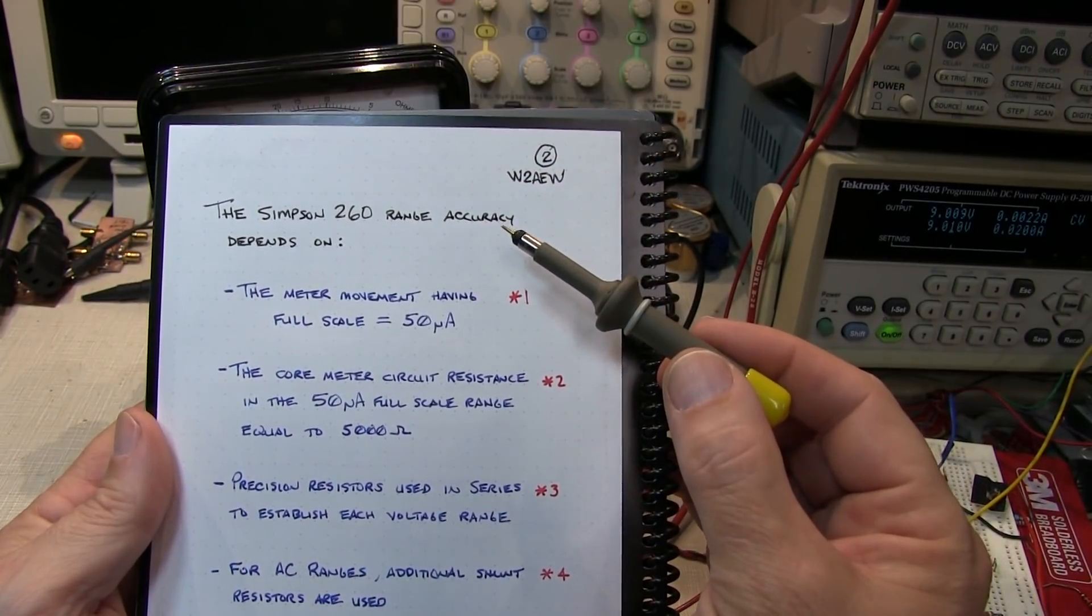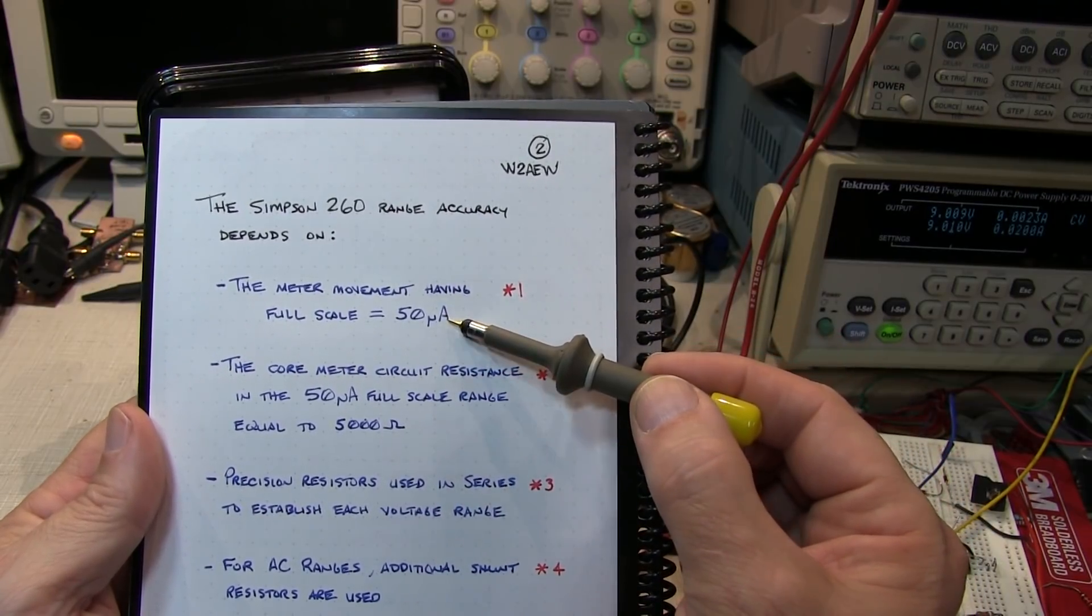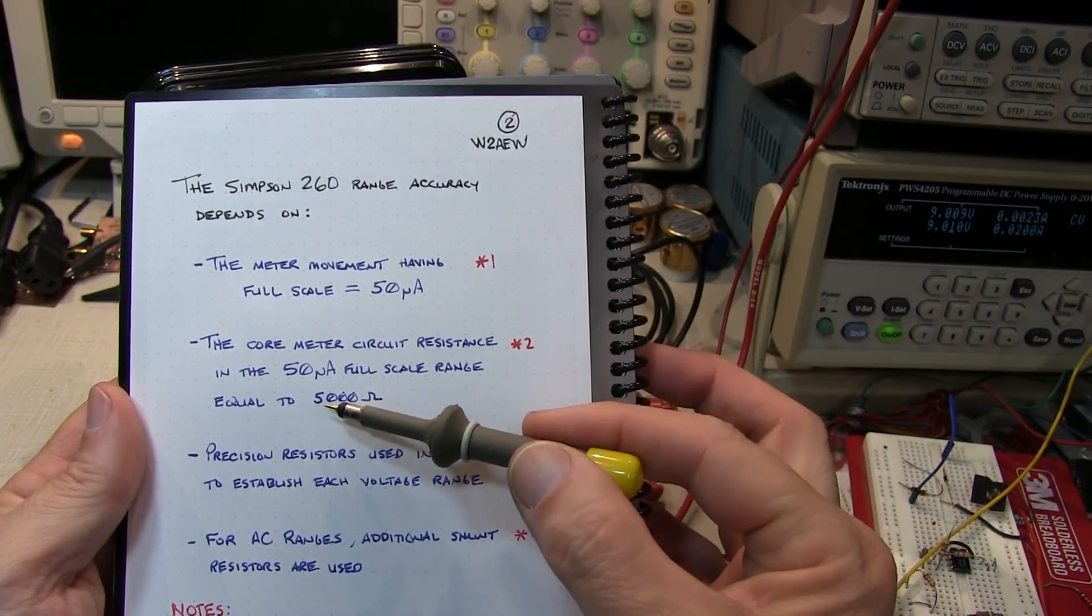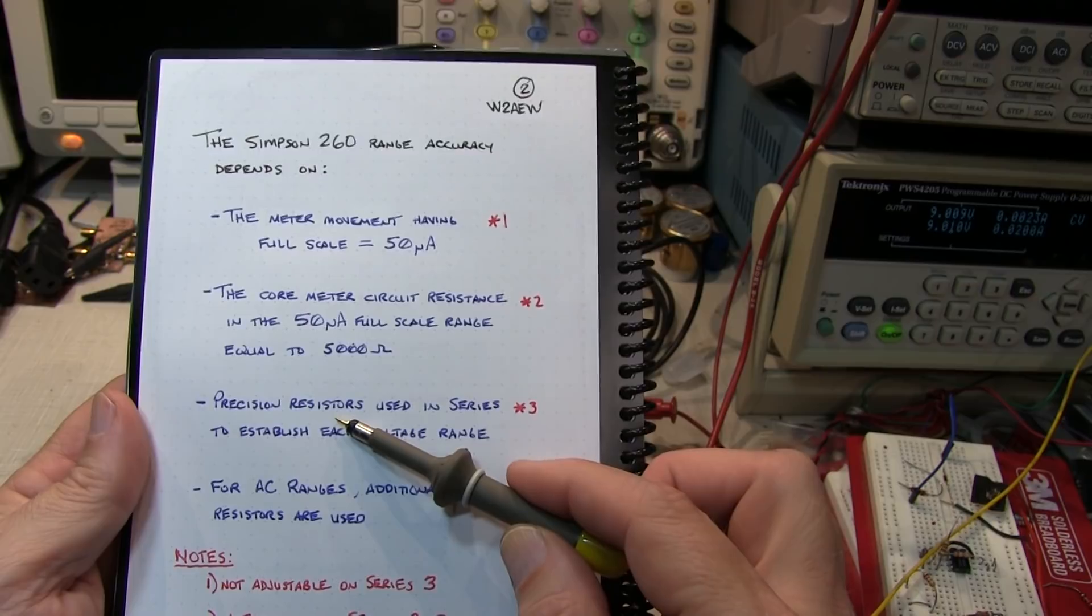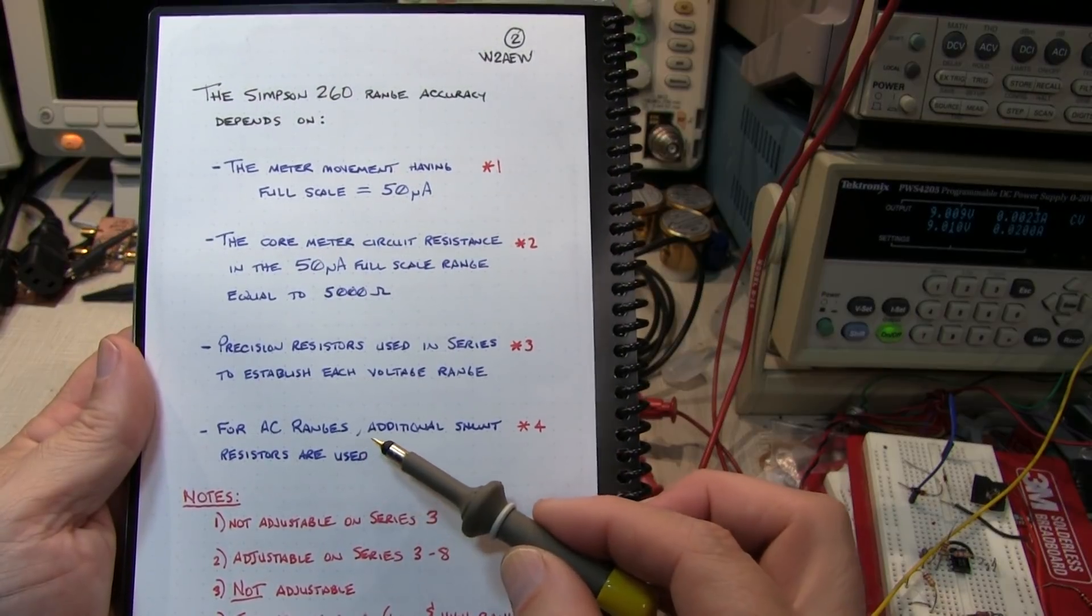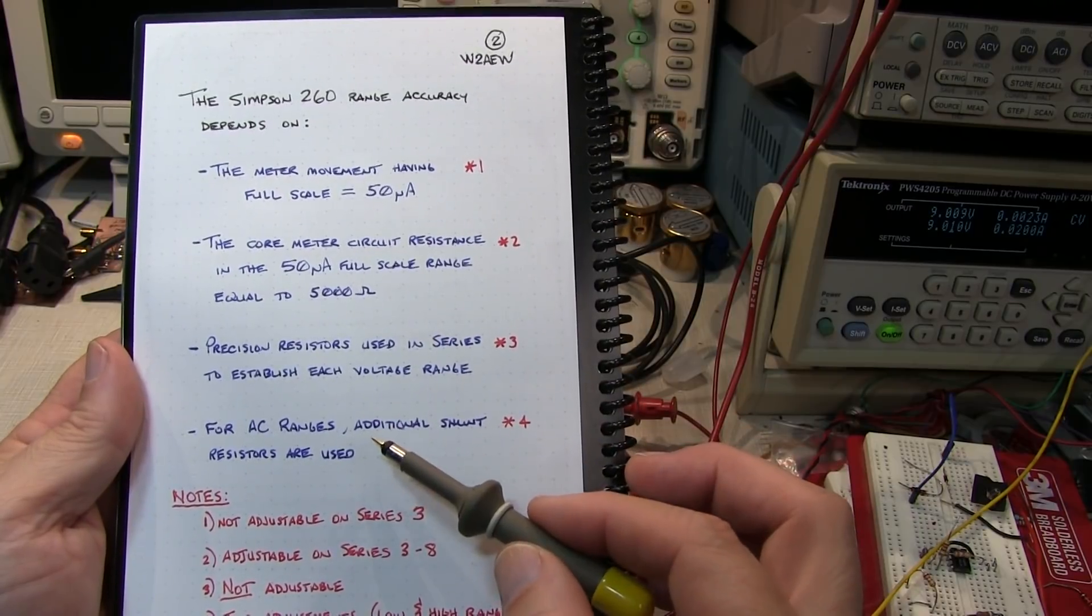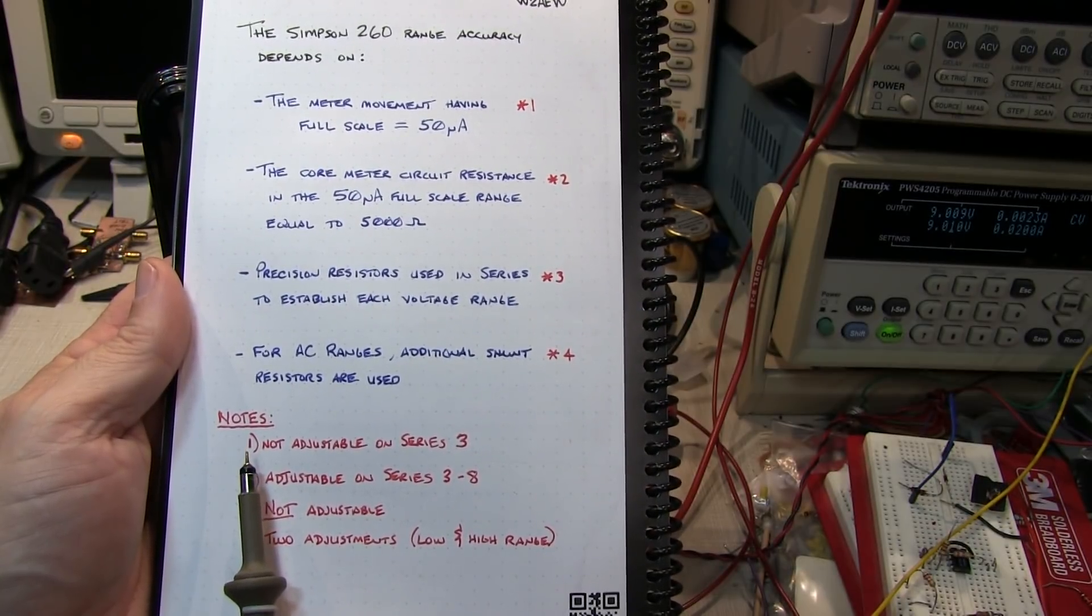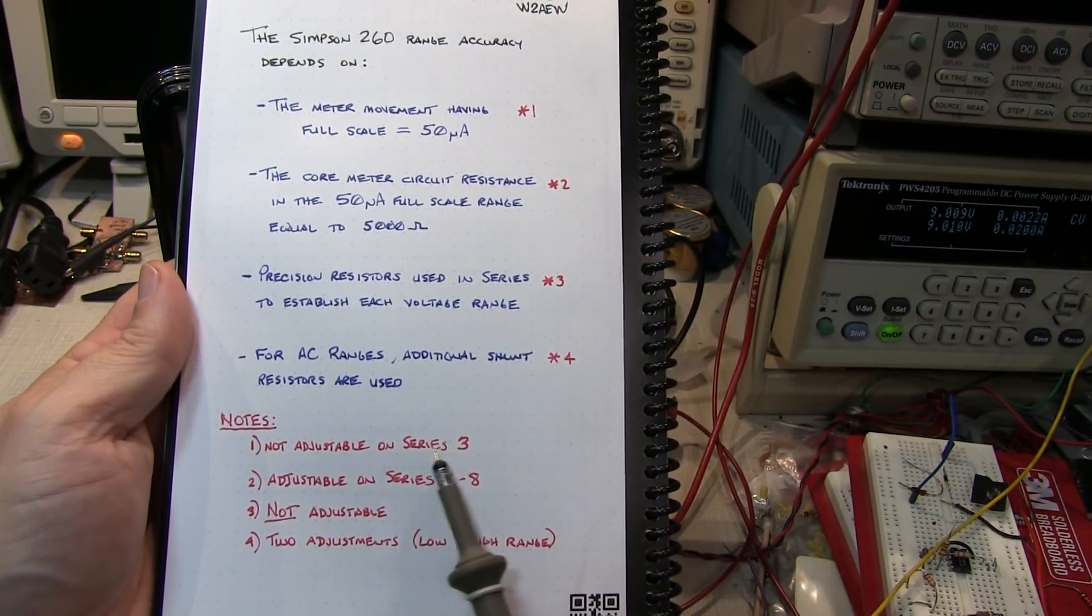The accuracy of the voltage ranges on the 260 depends on a couple of things. One, that the meter movement has a full-scale deflection of 50 microamps. And that the core meter circuit resistance in that 50 microamp range equals 5,000 ohms. The full-scale deflection of 50 microamps is adjustable on the 4, 5, 6, 7, and 8 series, but not adjustable on the 3 series.